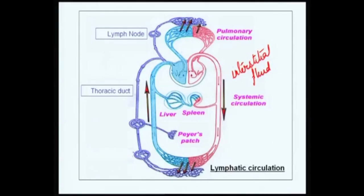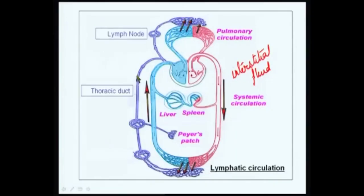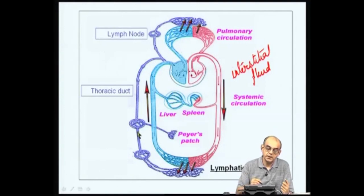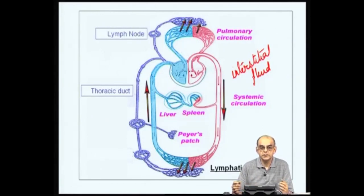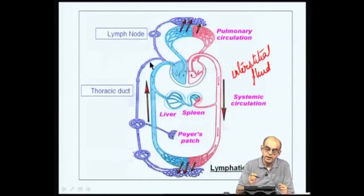Various cells migrating from different parts of the body, especially lymphoid cells, also drain into the thoracic duct. One important aspect of lymphoid or lymph circulation is that this flow is not actively pumped like the heart. Instead, the muscles lining these secondary lymphoid organs, as well as the muscles underlying the thoracic duct location, help propel the lymph fluid towards the heart. This is also facilitated by unidirectional valves, which prevent backflow of the lymph.